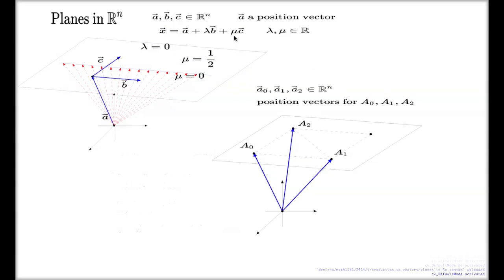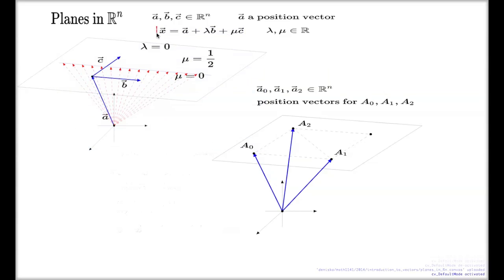By altering μ with different fixed values and letting λ run freely, you get the whole set of self-parallel lines which trace the entire plane. That's why we call this formula the parametric or vector equation of the plane. Of course, in higher dimensions there's no geometric representation, but we base our intuition on experience with three dimensions.